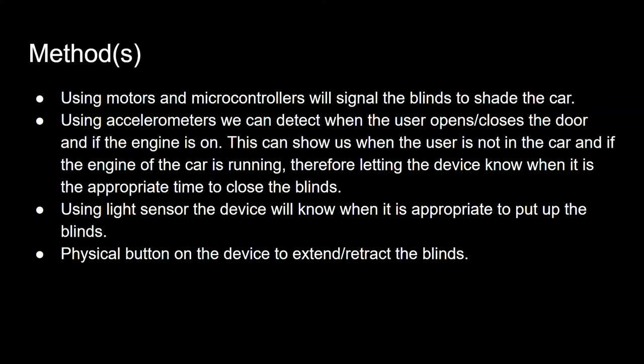Methods: using motors and microcontrollers will signal the blinds to shade the car. Using accelerometers, we can detect when the user opens or closes the door and if the engine is on. This can show us when the user is not in the car and if the engine is running, therefore letting the device know when it is the appropriate time to close the blinds. Using light sensors, the device will know when it is appropriate to put up the blinds. There is also a physical button on the device to extend or retract the blinds.